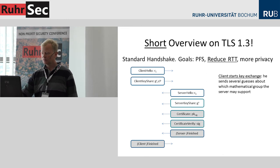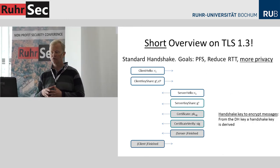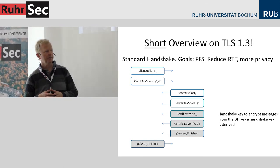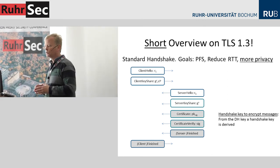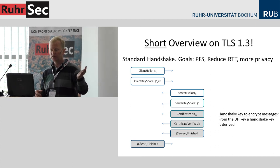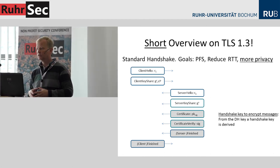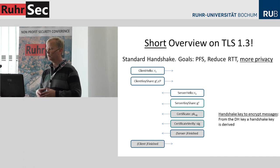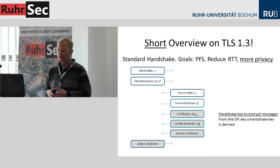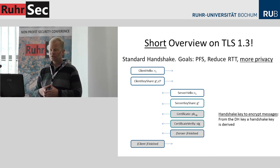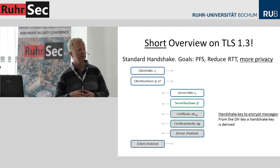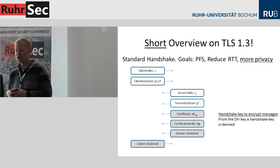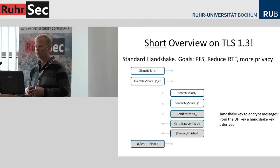More privacy is achieved simply by encrypting more. We can do this because the client now starts the handshake. After the server selects his Diffie-Hellman share and computes the key, he must send his share unencrypted but everything after that can be sent encrypted. Because the key exchange starts earlier, we can also encrypt earlier. One idea originally implemented by Google in QUIC was to start encrypting immediately — for which we need some server key cached on the client side.